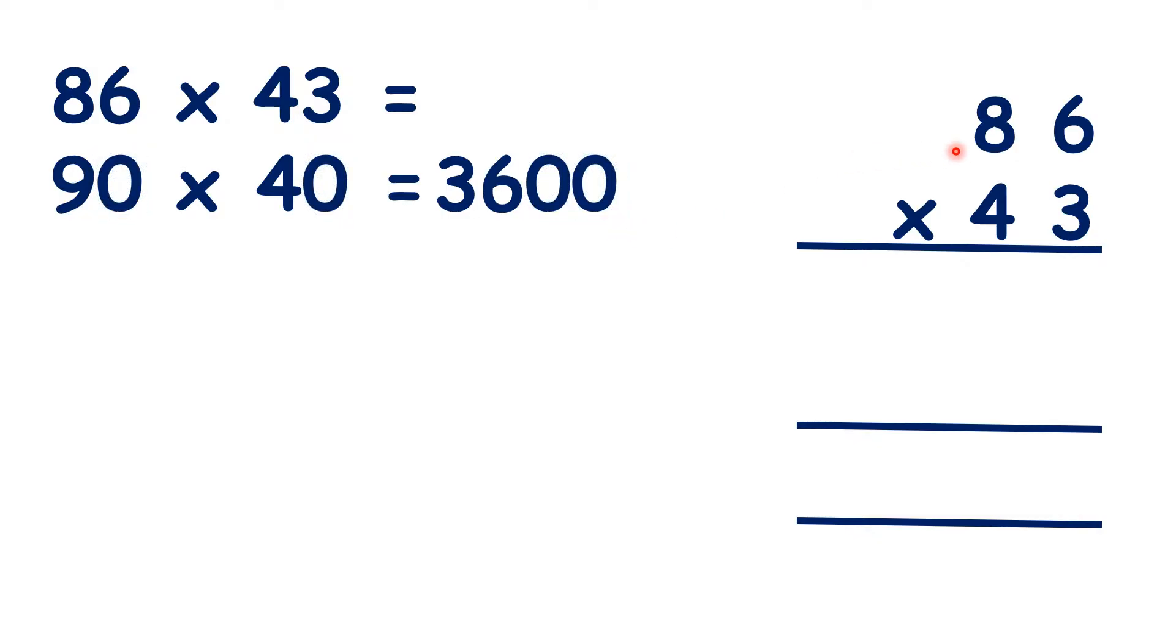Now we can work out 86 times 43, and we know that our answer should be something close to 3,600. So, 6 times 3 is 18, 8 times 3 is 24, plus 1 is 25.